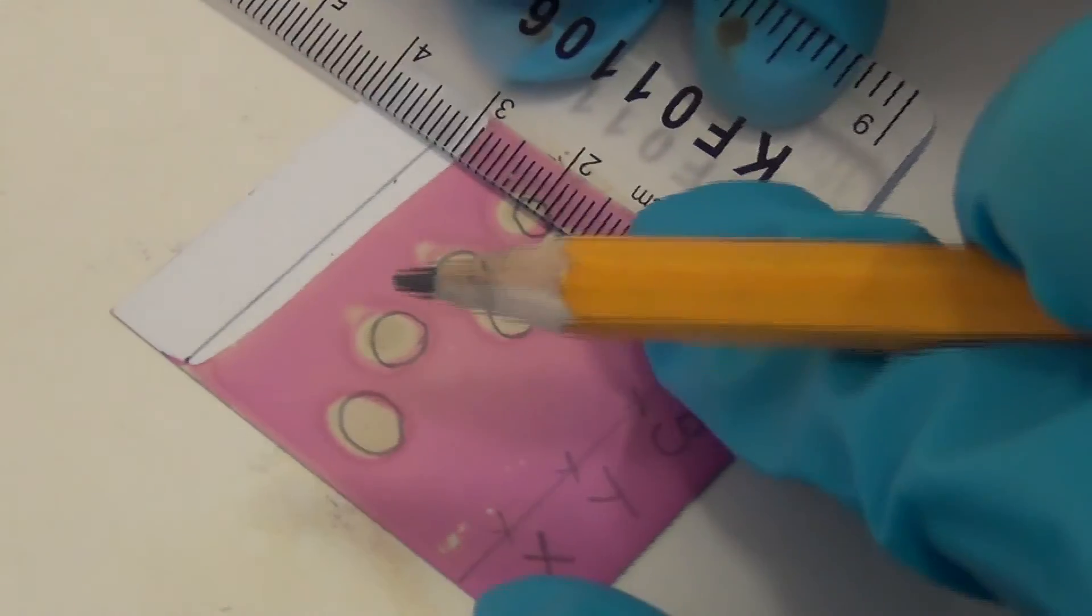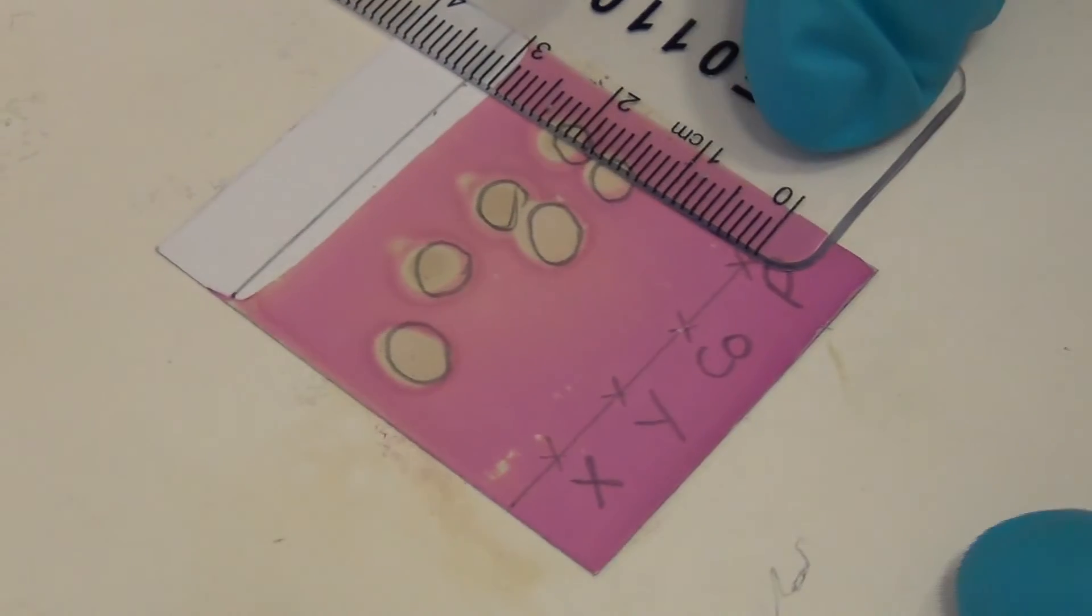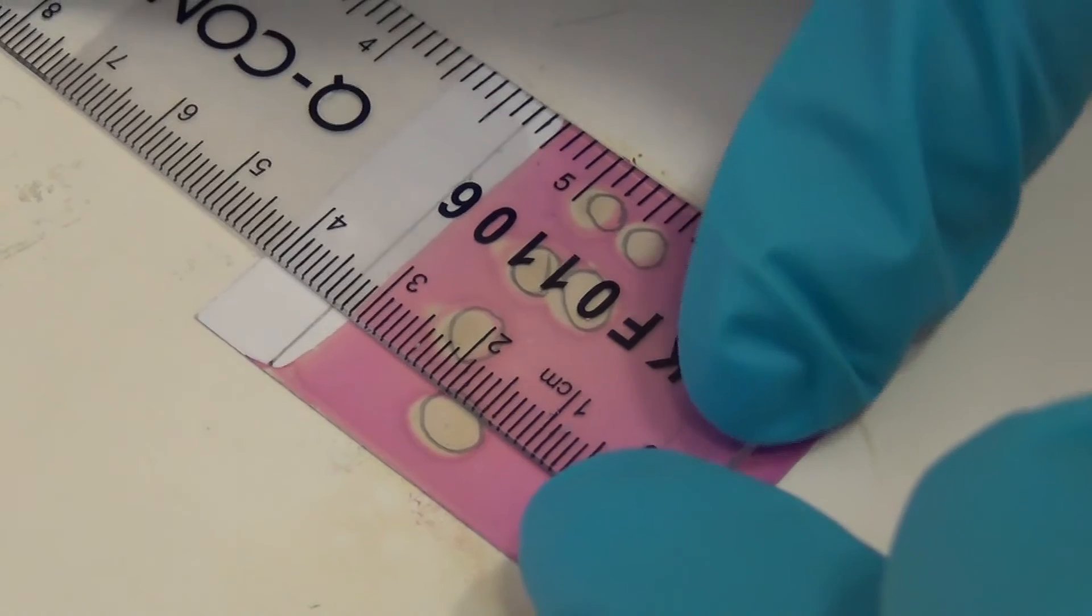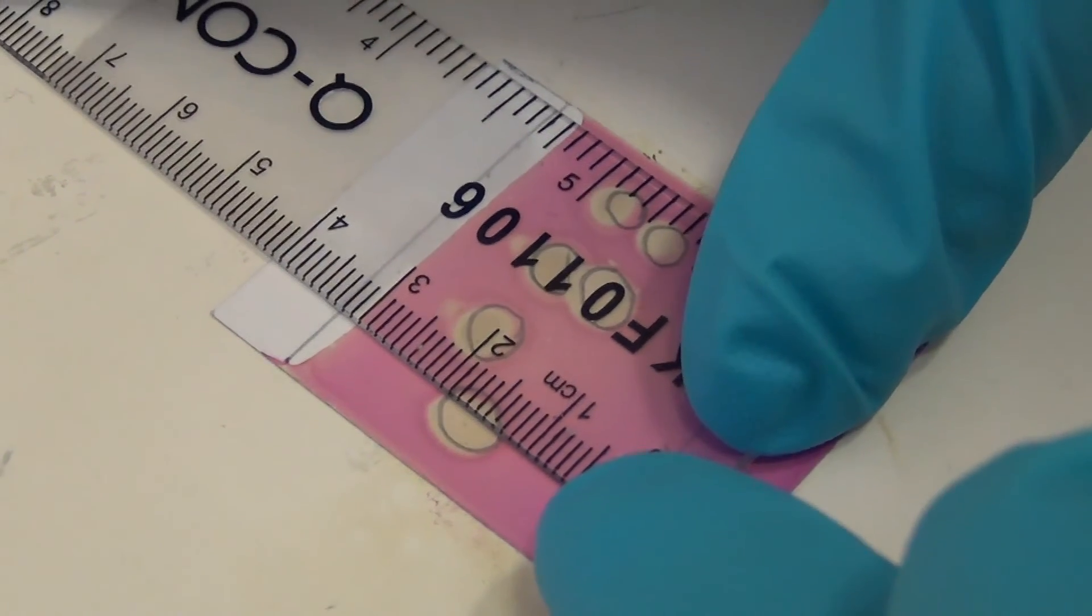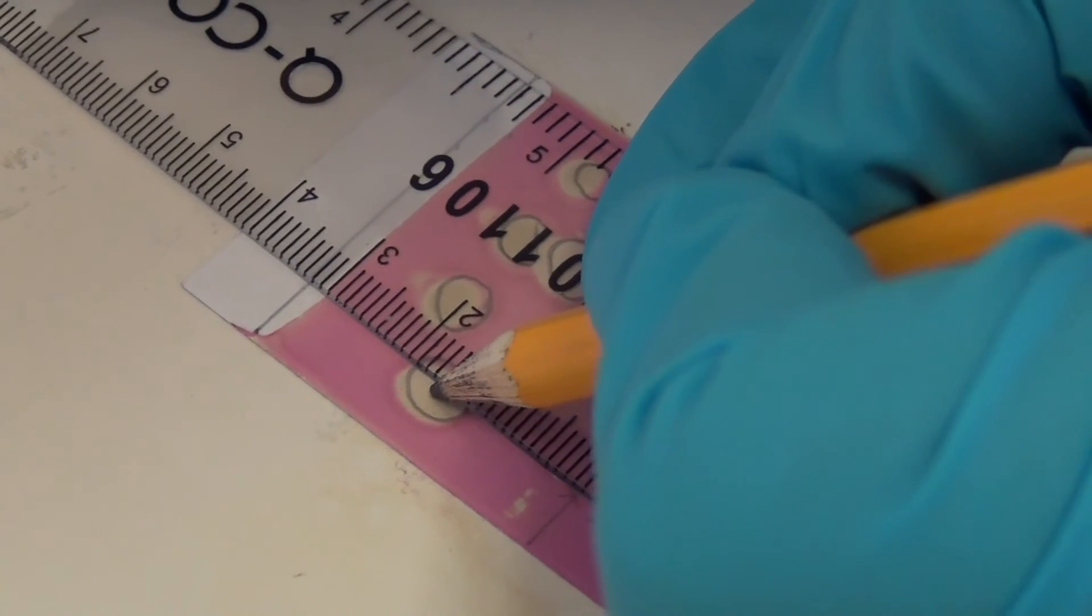Now we need to measure the RF values for our spots. Firstly, you use a ruler to measure the distance travelled by the solvent front from the baseline. Here it is 3.2 centimetres. Then you measure the distance from the baseline where the samples were spotted, to the middle of each spot on the plate, noting down these values.